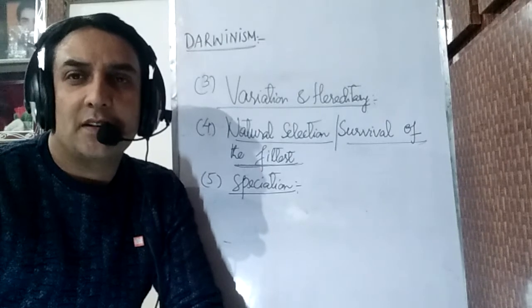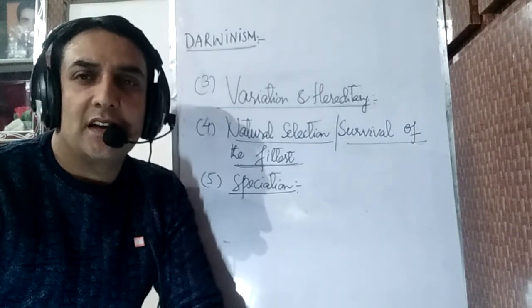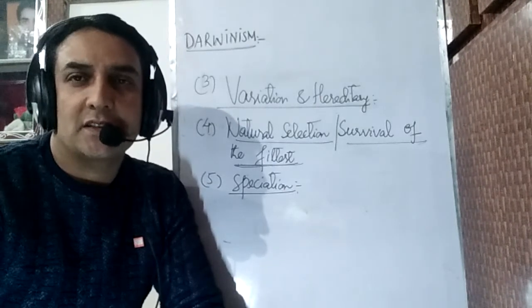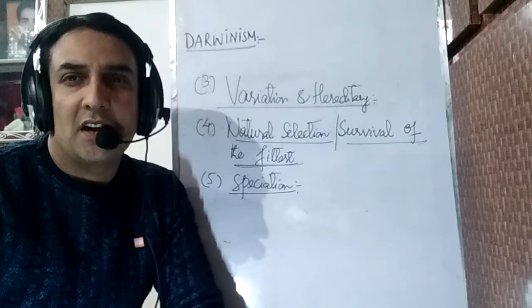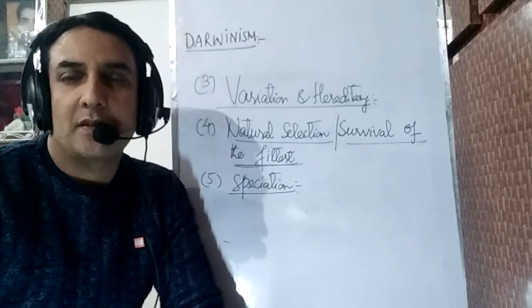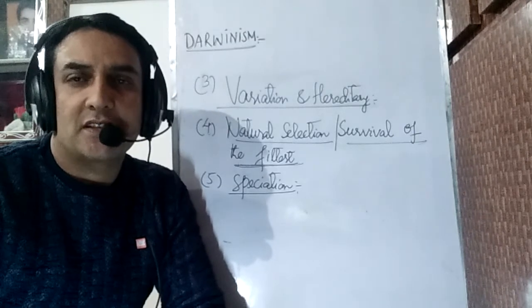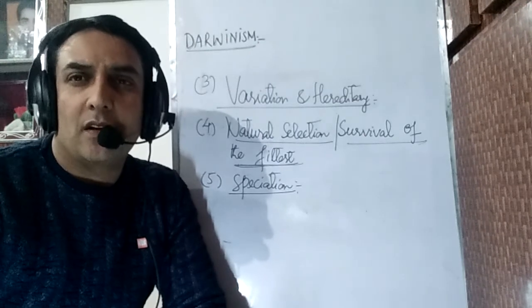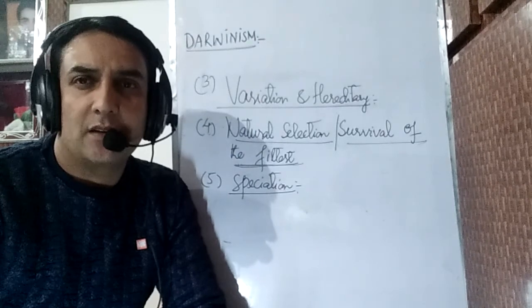To summarize, the first point in Darwin's theory is overproduction. The second is competition, which is of three types: intraspecific, interspecific, and extraspecific. The third point is variation and heredity. The fourth point is survival of the fittest, or natural selection. And the fifth point is speciation. Hope that you have understood the concept very well. For more lectures, you can subscribe to our channel, Madhavir's Biology column. Thank you.